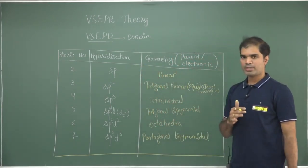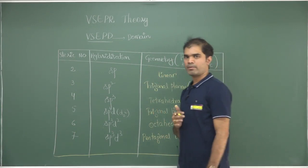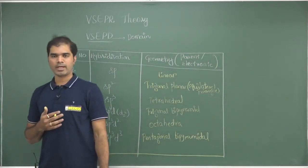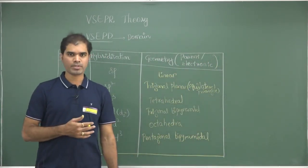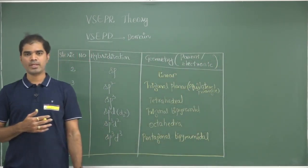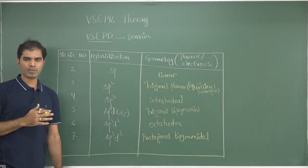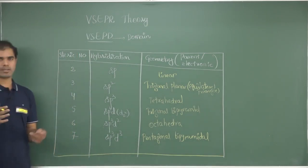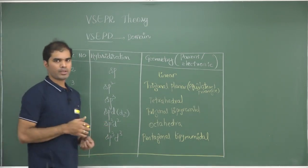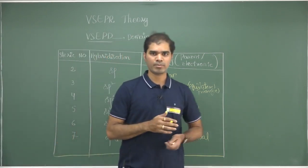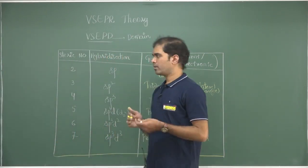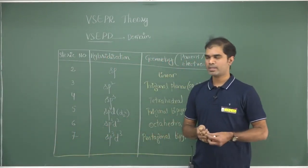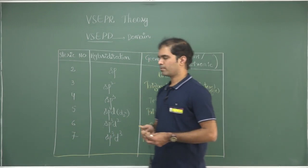Once a molecule is chosen, we give it AXE symbolism. For a corresponding AXE symbolism, the number of bond pairs, the number of lone pairs, and corresponding geometries — all these things will be discussed in a separate class. Thank you.